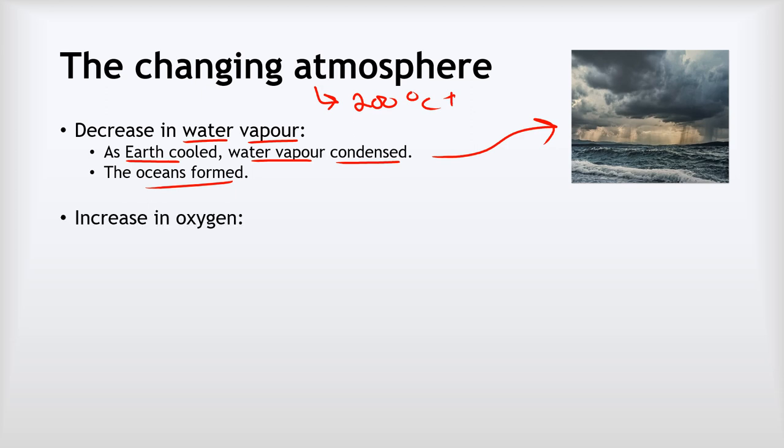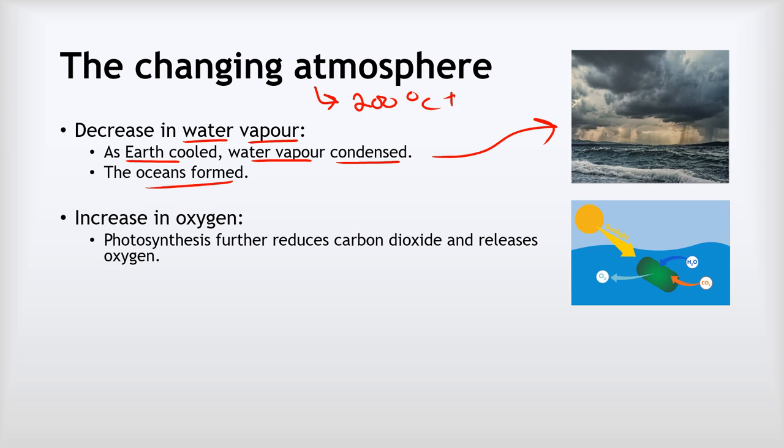Next then was the increase in oxygen. Now the big event that caused the increase in oxygen was the evolution of life that could photosynthesize. What photosynthesis does is it consumes carbon dioxide and releases oxygen. So this had a dual effect. Not only was it increasing the oxygen concentration but it was also decreasing the carbon dioxide concentration.